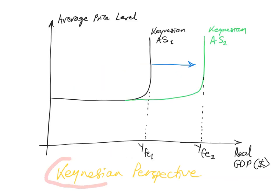From the Keynesian perspective, supply-side policies will also shift the Keynesian aggregate supply curve in the long run, as you can see from the Keynesian AS1 to Keynesian AS2.